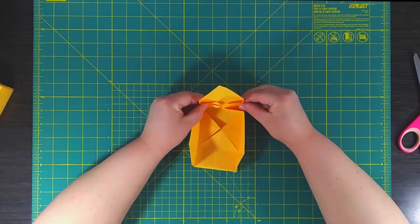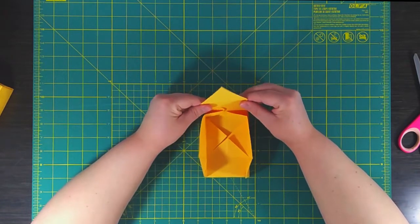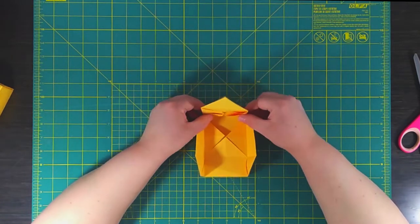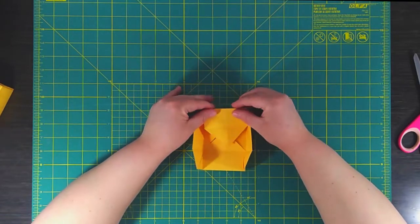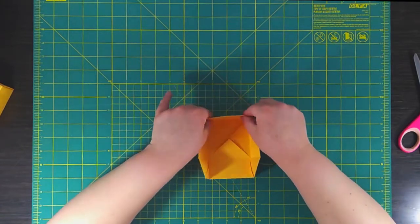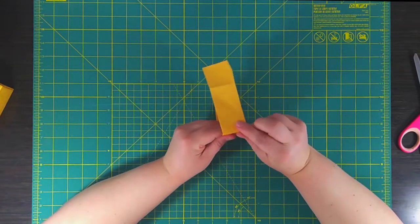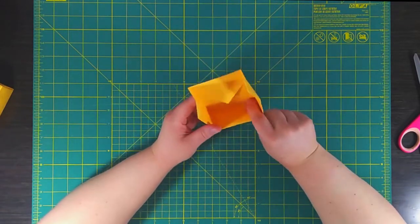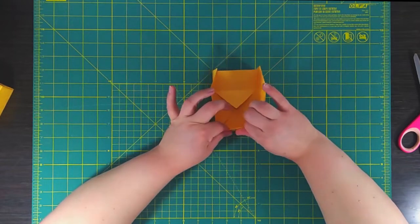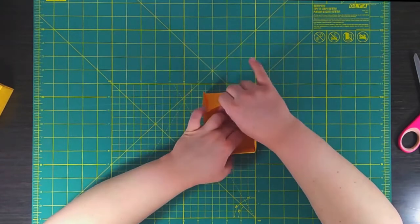And then once you get your corners pointed inside you might need to pinch them a little bit more to get them to cooperate and then fold it over on itself. So you've made the third side of the box and you can pinch your corners to help it along a little bit. And now do the same thing on the other side.